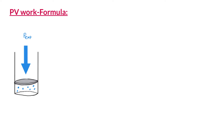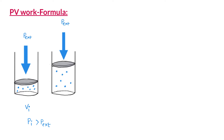Let us now derive a formula to calculate the amount of work done when a gas expands or compresses. We take the same setup — a sample of gas trapped inside a rigid cylinder with a movable piston. Let the initial volume of the gas be Vi and the initial pressure be Pi. Since Pi is greater than the external pressure, the piston moves outward until the pressure of the gas inside equals the external pressure.